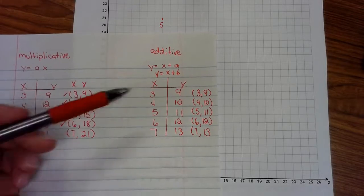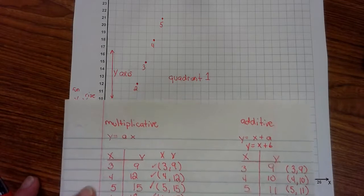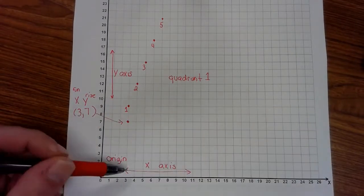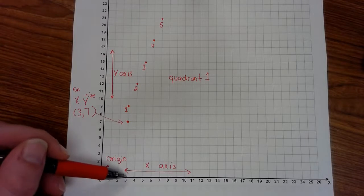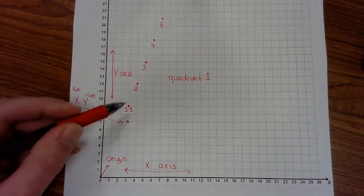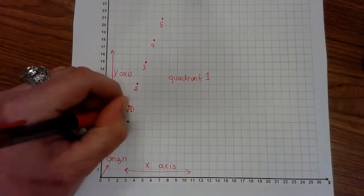Once I have my ordered pairs, I can then come over to my coordinate grid and plot them. My first point is 3, 9. I go over 3, I go up 9. That is also the same point for exercise number 2.